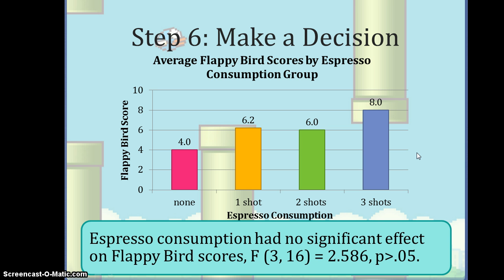Here is a summary statement. A graphic shows average Flappy Bird scores by espresso consumption group: no espresso is 4.0, one shot is about 6.2, two shots is about 6.0, and three shots is 8.0. Even the difference between 4.0 and 8.0 is not statistically significant, so we conclude that espresso consumption had no significant effect on Flappy Bird scores. In APA style: F(3, 16) = 2.586, p > 0.05.